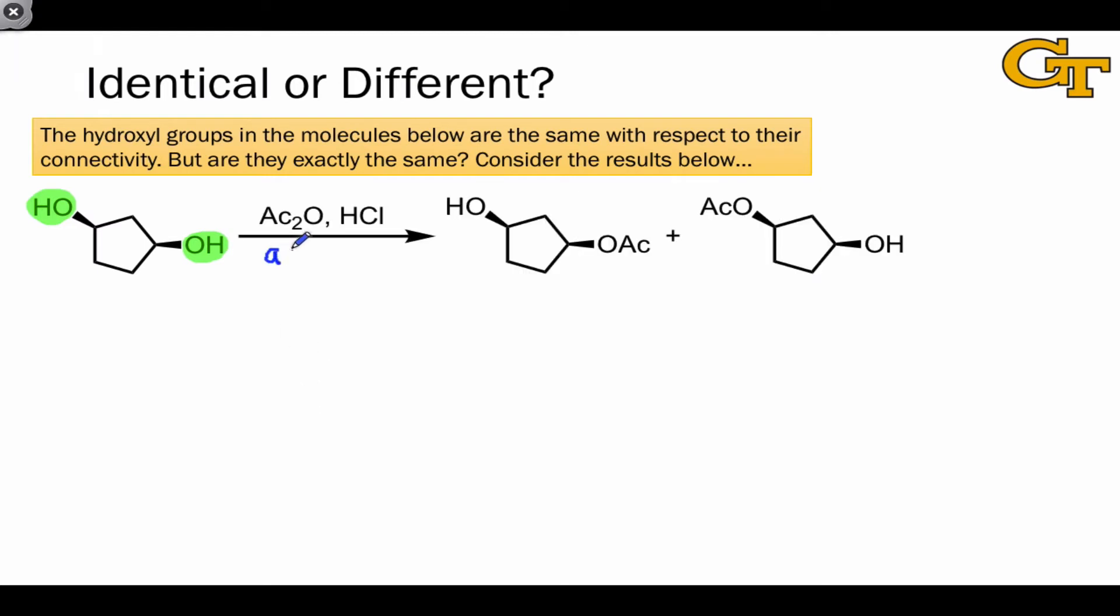Under the achiral reaction conditions shown here, we end up with a 50% yield of the molecule on the left, and a 50% yield of the molecule on the right. If we think about the configurations of the two stereocenters in this molecule, R and S in the left-hand molecule, and S and R in the right-hand molecule, we'll see that these two are enantiomers. They're mirror images, and they're non-superimposable. As a result, what we obtained under these conditions is a racemate.